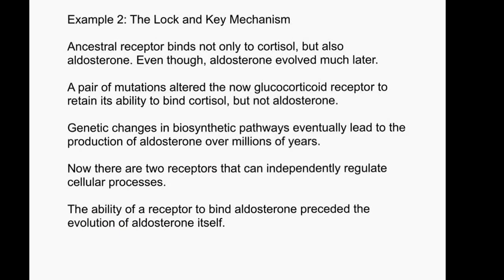The lock and key mechanism showed how receptors evolved to accept a signal that does not yet exist. The ancestral receptor binds not only to cortisol but also to aldosterone, even though aldosterone evolved much later. A pair of mutations altered the now-glucocorticoid receptor to retain its ability to bind to cortisol but not aldosterone.